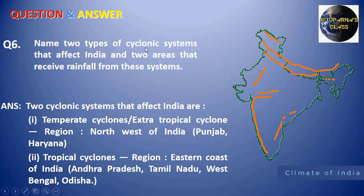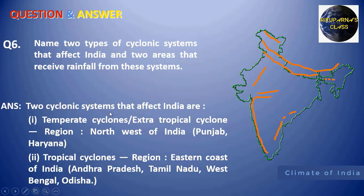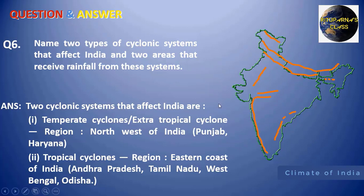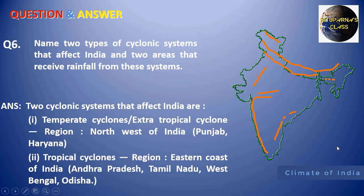Next: name two types of cyclonic systems that affect India and two areas that receive rainfall from these systems. There are two types of cyclones: the temperate cyclone and the tropical cyclone. During the retreating monsoon or cold weather season, a tropical cyclone develops over the Bay of Bengal because the southern portion of India receives almost direct sunlight, creating low pressure over the adjoining ocean.